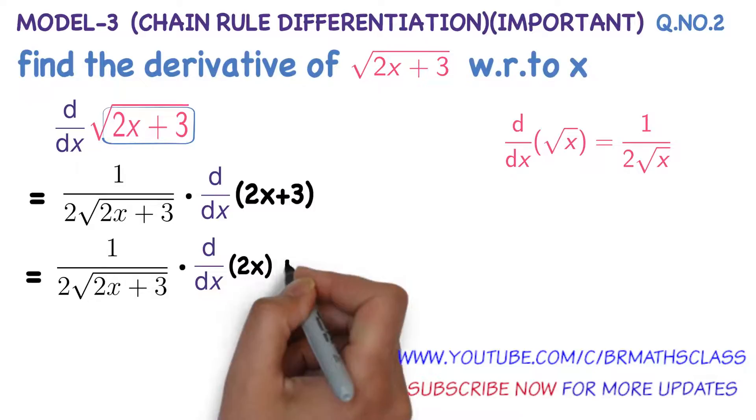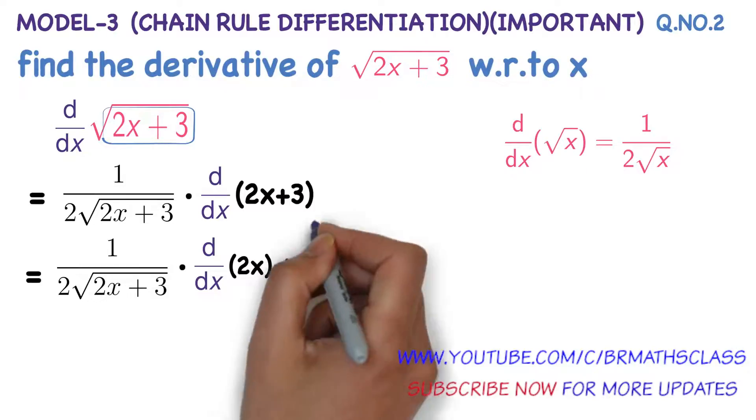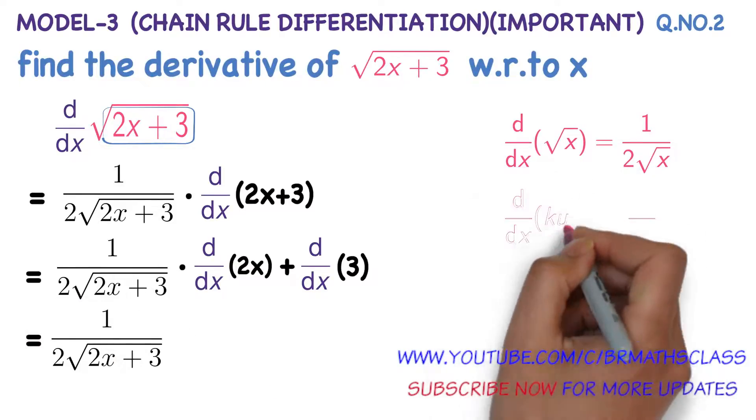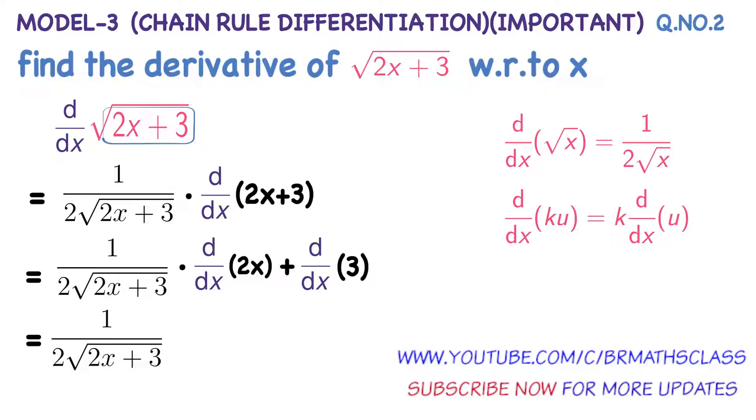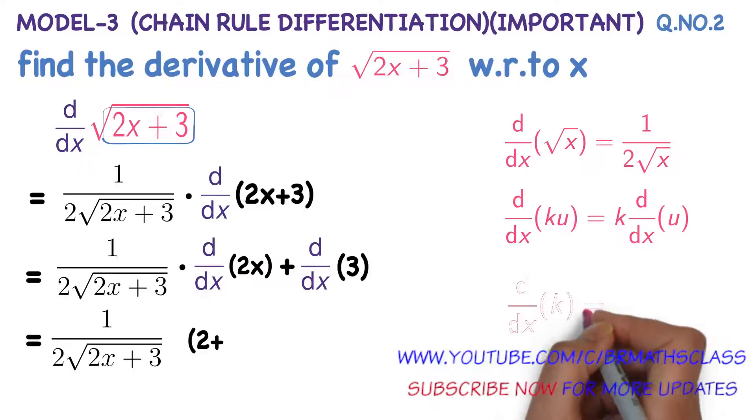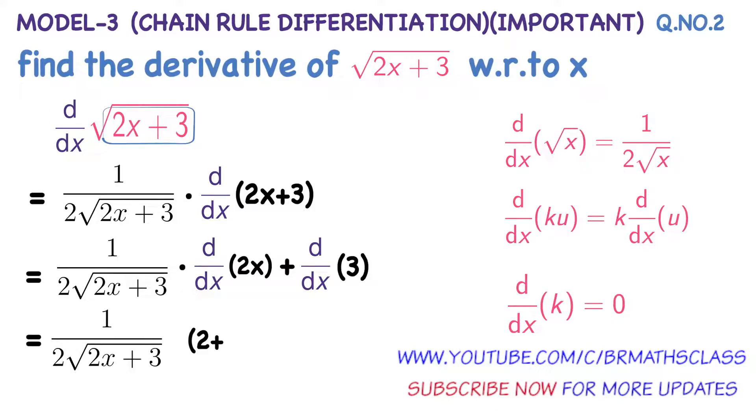We write it as derivative of 2x plus derivative of 3. We differentiate each and every term. That is equals to 1 divided by 2 into square root of 2x plus 3 into, we know this formula, derivative of ku is k into derivative of u. So derivative of 2x is 2 plus derivative of constant is 0. So derivative of 3 is 0. We know 2 plus 0 is 2.